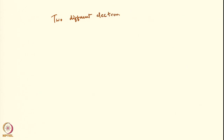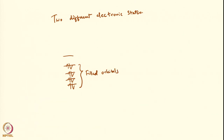Electronic transitions happen between two different electronic states. For example, you have a molecule and one can define an electronic configuration. Even for atoms, you can define an electronic configuration, and let us suppose they are all filled orbitals using Pauli's exclusion principle or Aufbau principle or a combination of them. So these are filled orbitals and these are unfilled orbitals.